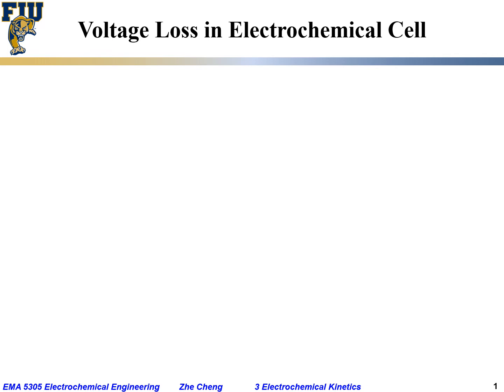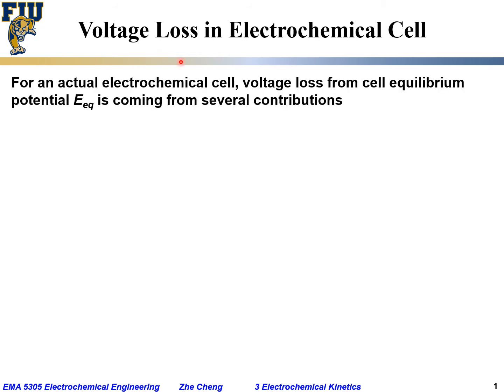As mentioned earlier, in an electrochemical cell, when you start to operate it — either in galvanic cell mode or electrolytic cell mode — there will be a voltage loss, meaning the difference between the actual cell voltage or cell potential versus the so-called equilibrium cell voltage. The actual cell voltage will have a loss from the equilibrium cell potential.